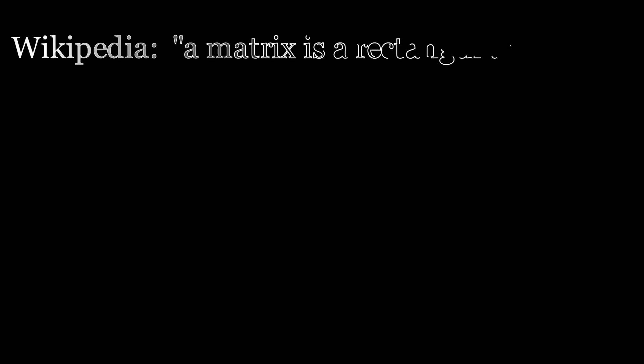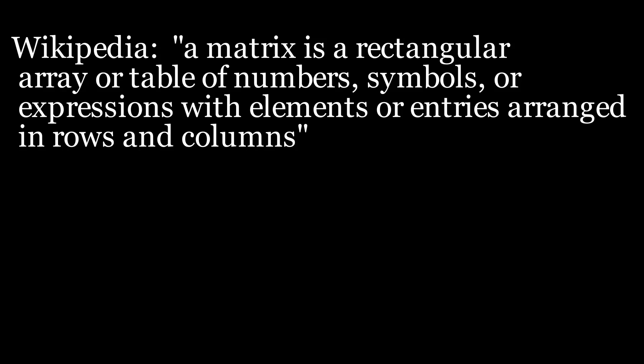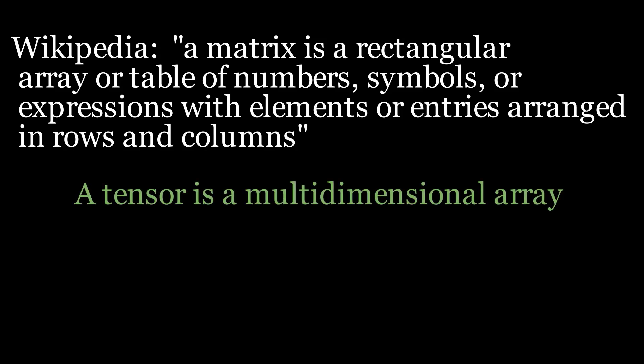If you are watching this video, I assume you are familiar with matrices. What is a matrix? Wikipedia defines it as a rectangular array or table of something. What that something is doesn't matter as much as the fact that it is a rectangular, or regular, grid of objects — more specifically, a two-dimensional grid of objects. So what happens if you wanted a three-dimensional grid, a four-dimensional grid, or a 23-dimensional grid? In that case, what we have is a tensor.